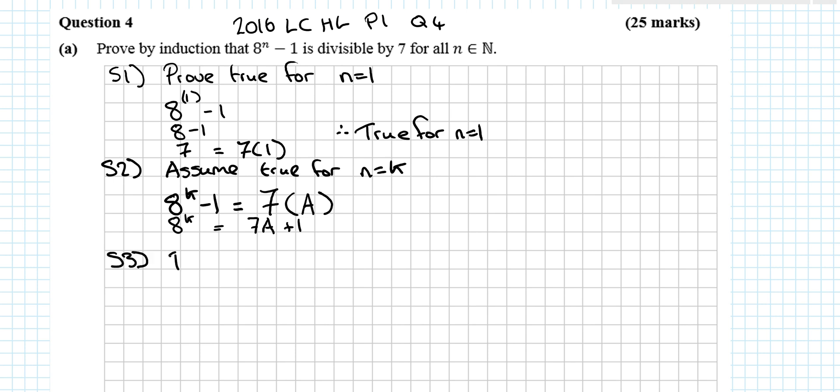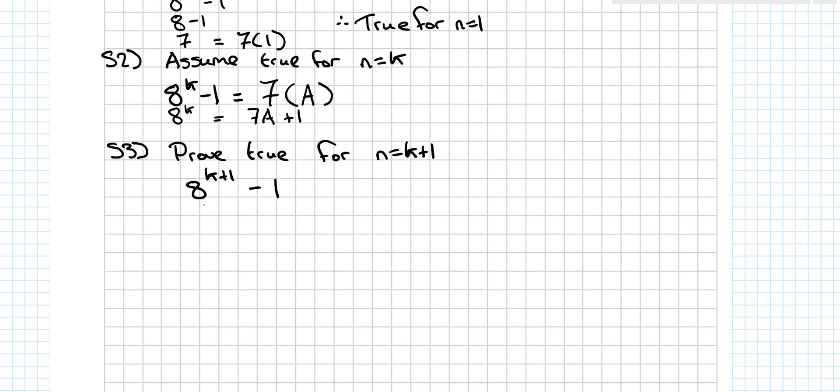Step 3. Prove true for n equals k plus 1. Let's go back, we go 8^(k+1) minus 1. And I want to show that this is divisible by 7. But I'm going to use my assumption. So I use page 21 of the log tables, the first rule. Page 21 of the log tables. The first rule of indices to break this apart.